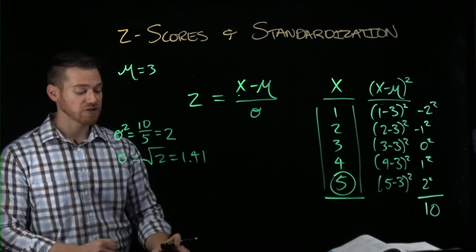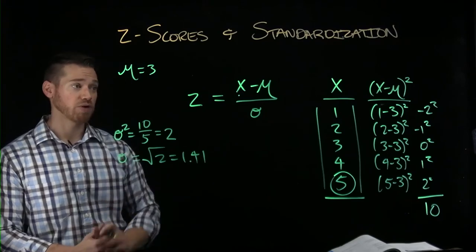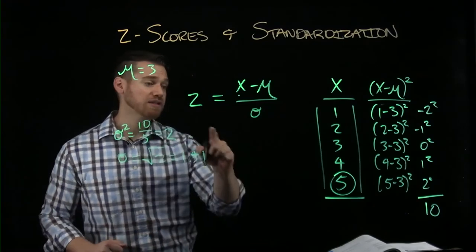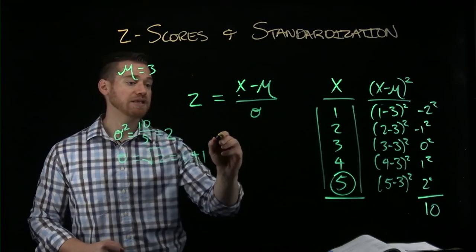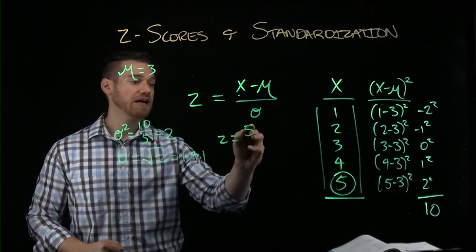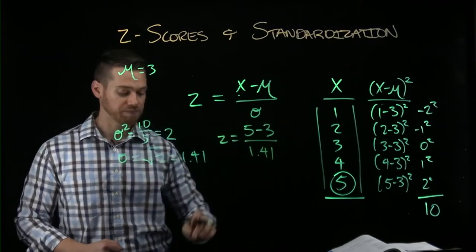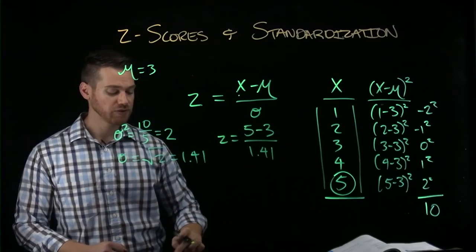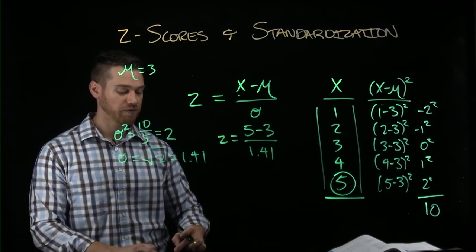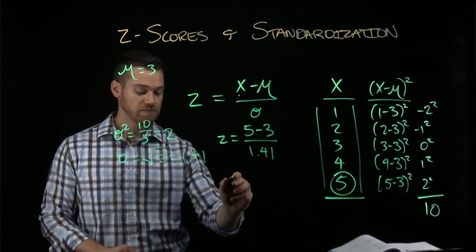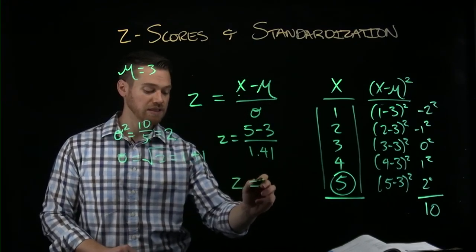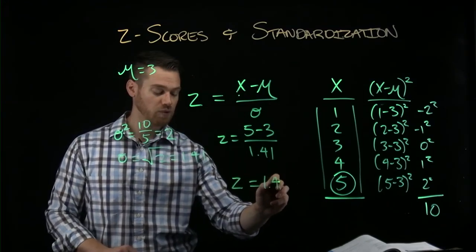So in this case, if our standard deviation is rounded here to 1.41, and we want to get the z-score for 5, we're going to take z equals 5 minus 3 over 1.41. So that's 2 divided by 1.41. And z equals, then, 1.42.